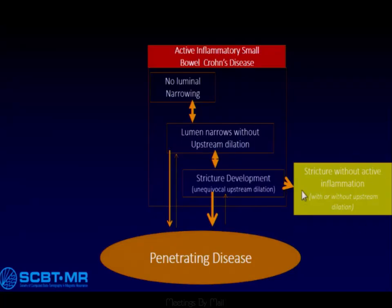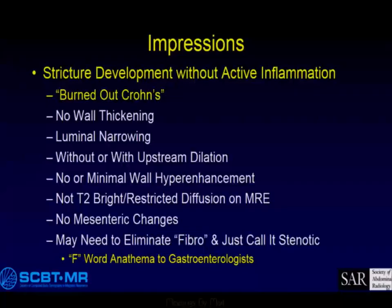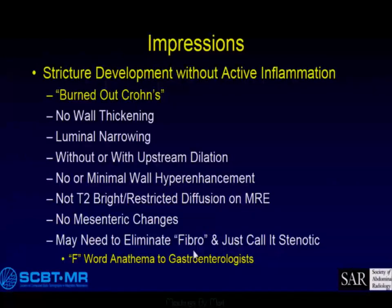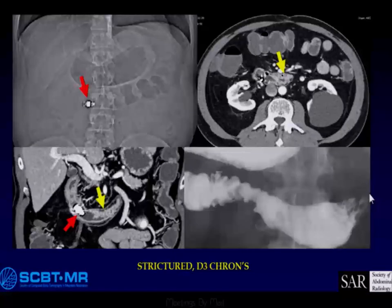What about stricture without active inflammation? These are patients with burned-out Crohn's disease. Most have some degree of upstream dilation — folks who have accommodated to their disease and regulate their diet, walking around with dilated loops and strictures. There is no or minimal wall thickening, luminal narrowing, may or may not have upstream dilation. No hyperenhancement, not T2 bright or restricted diffusion. We're not calling these fibrostenotic — just strictures without active inflammation.